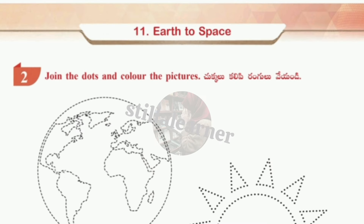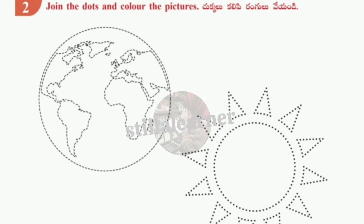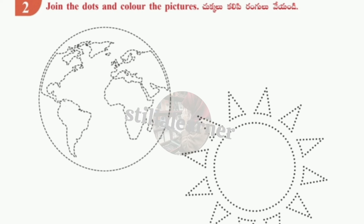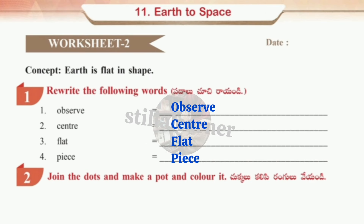Roman numeral two of Worksheet 1: join the dots and color the pictures. Some figures are given — you have to join each dot so that it makes a perfect picture, and then color it. Moving on to Worksheet number two, you also need to rewrite the following words.